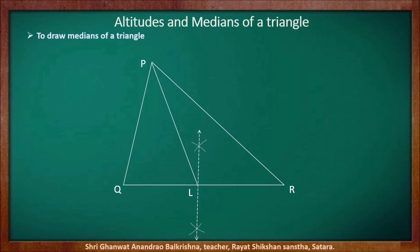Now for another median, we will find the midpoint of segment PR. For that, draw a perpendicular bisector of segment PR. M is the point of intersection, meaning point M is the midpoint of segment PR. Now join vertex Q and midpoint M — segment QM is another median of triangle PQR.